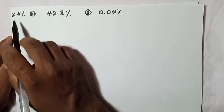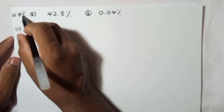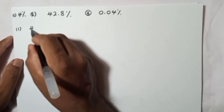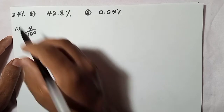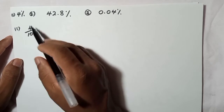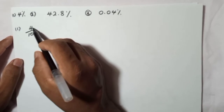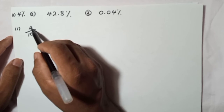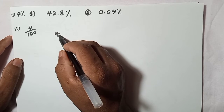The first example is 4%. Four percent means four out of hundred, so you can write 4 over 100. Now, as I discussed earlier, to divide by 100 we move the decimal point twice to the front.